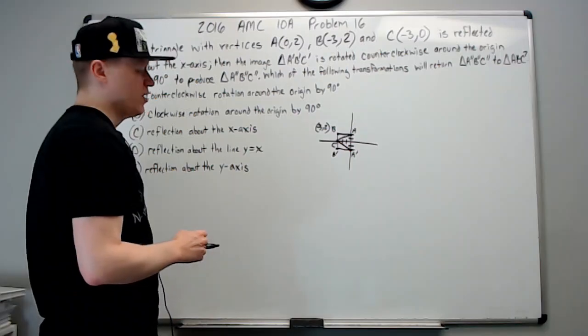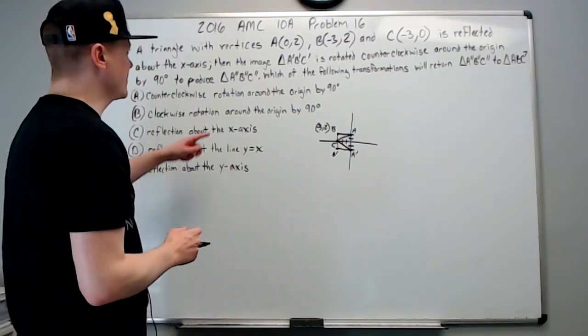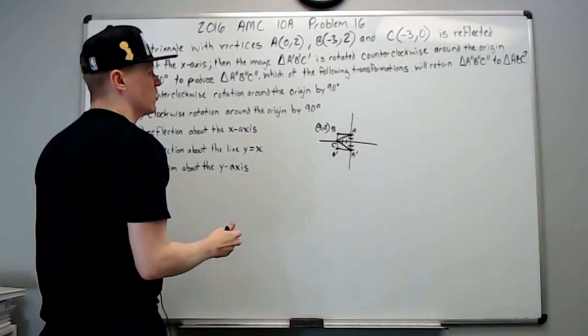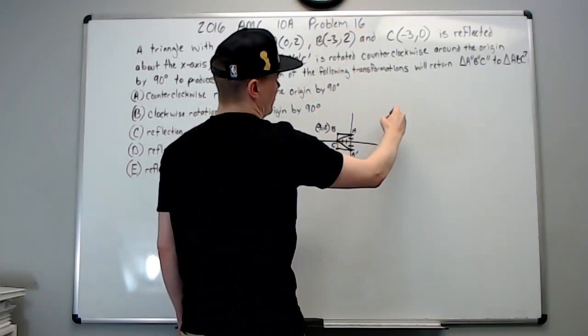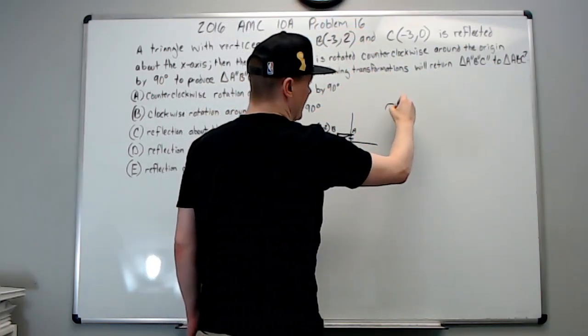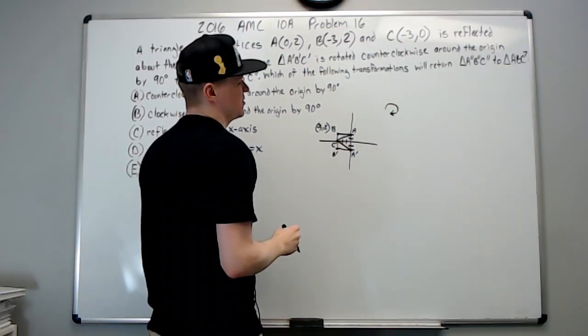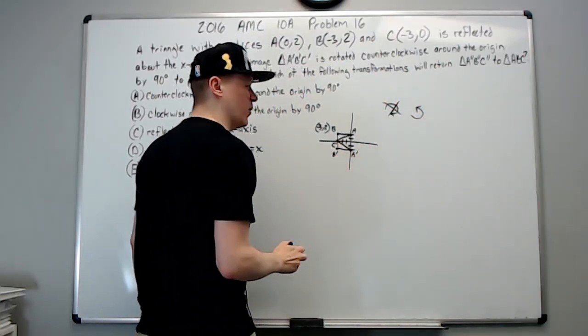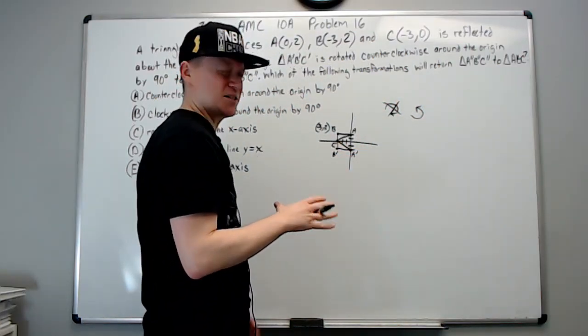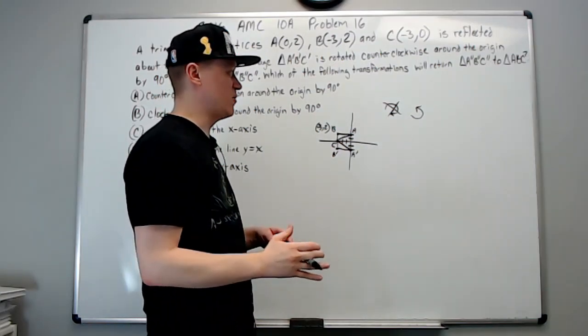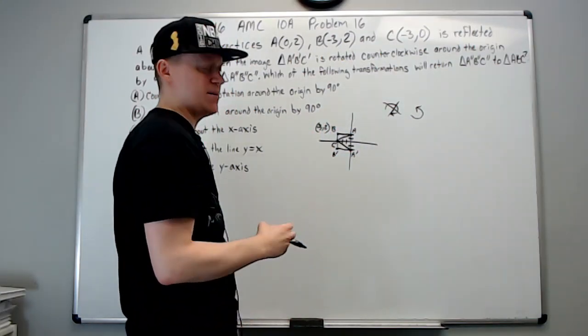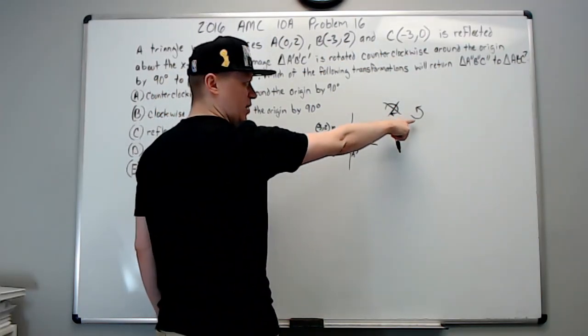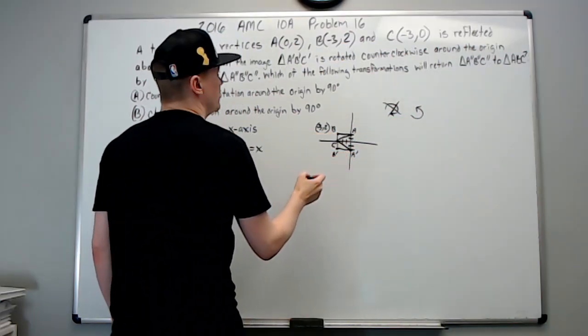Okay, so what does it say next? Then A prime B prime C prime is rotated counterclockwise around the origin. The normal clock travels like this, right? That's clockwise - that's the way the minute hand, the hour hand, the second hand all move. So counterclockwise is going to go this way. Just refresh your memory on that, make sure you're checking, because if you accidentally go clockwise when you were supposed to go counterclockwise, there goes your AMC qualification possibly.